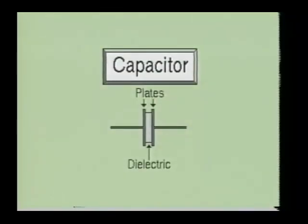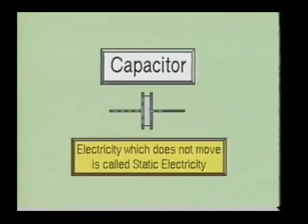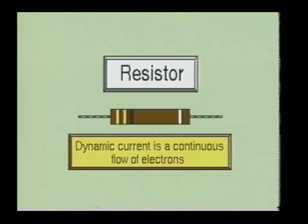Electrons can either rest on a surface as they do on the plates of a capacitor, or move through a material as they do in a resistor. Each has its place in the field of electronics. When electrons form on a surface as they do on the plates of a capacitor, it causes the surface to become negatively charged. Since the electrons are not moving, the surface can be said to have a negative static electrical charge. On the other hand, the current will continue to flow through a resistor as long as there is a voltage being applied forcing the electrons through the device. This is referred to as dynamic current flow.